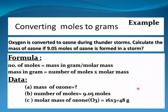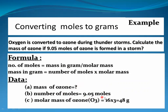Converting moles to grams — example. Oxygen is converted to ozone during thunderstorms. Calculate the mass of ozone if 9.05 moles of ozone is formed in a storm. First, write the formula: number of moles = mass in grams ÷ molar mass. Since number of moles is given and we need mass in grams, we rearrange: mass in grams = number of moles × molar mass. Number of moles is 9.05 moles. Molar mass of ozone: there are 3 oxygen atoms in ozone, and the molar mass of oxygen is 16, so 16 × 3 = 48 grams per mole.